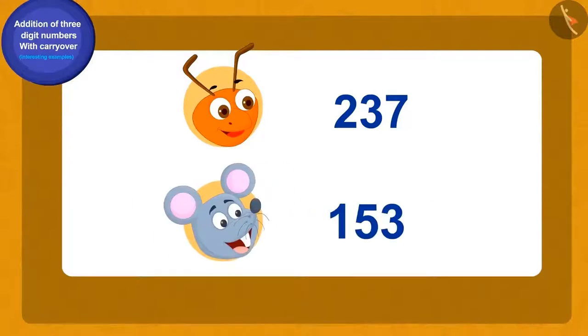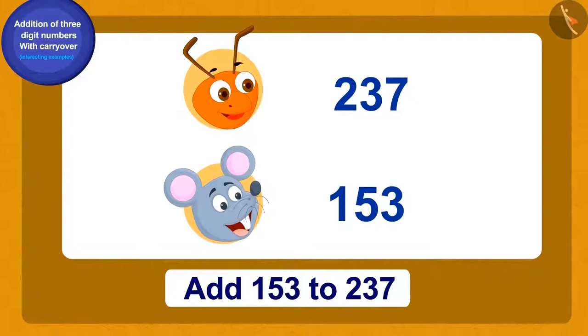There were 237 ants and 153 rats. Can you tell how many total animals were there in the herd? To find the total number of animals of the flock, we will add 153 to 237.